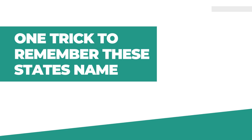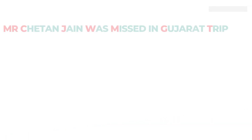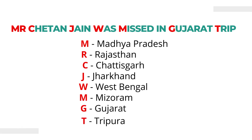Now, one trick to remember these state names. Remember this line: 'Mr. Chetan Jain was missed in Gujarat trip.' If we take the initial letter of each word — M for Madhya Pradesh, R for Rajasthan, C for Chhattisgarh, J for Jharkhand, W for West Bengal, M for Mizoram, G for Gujarat, and T for Tripura.